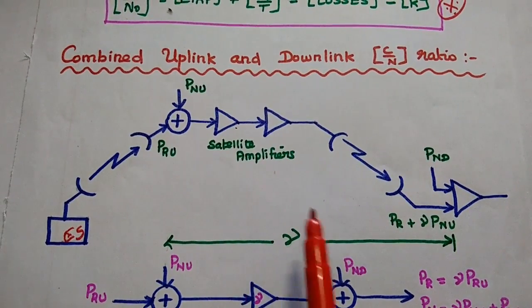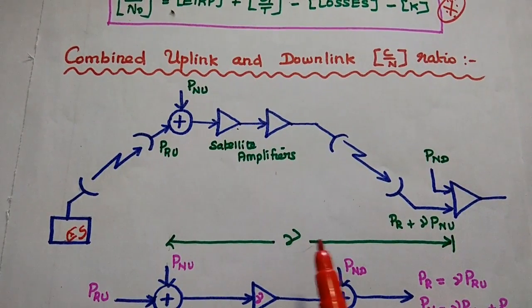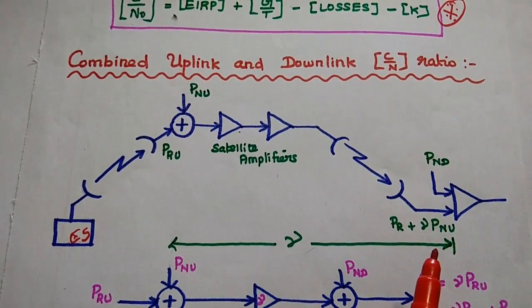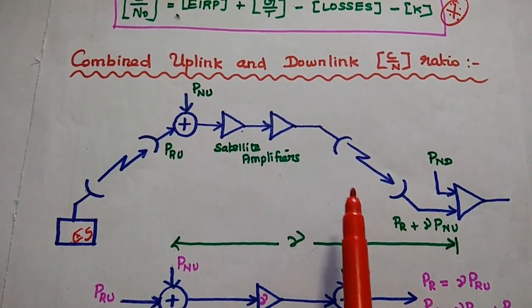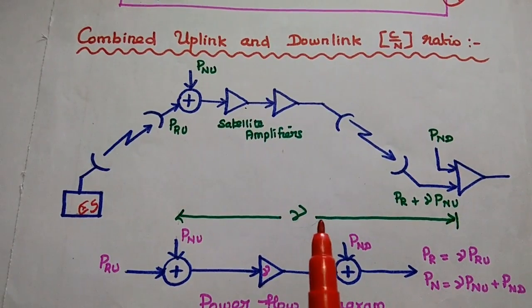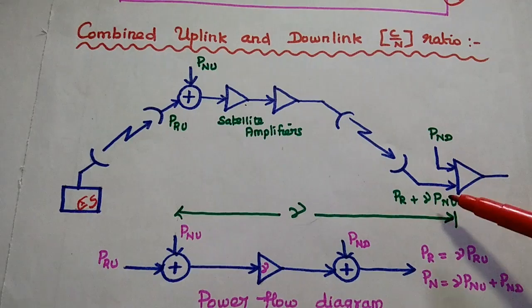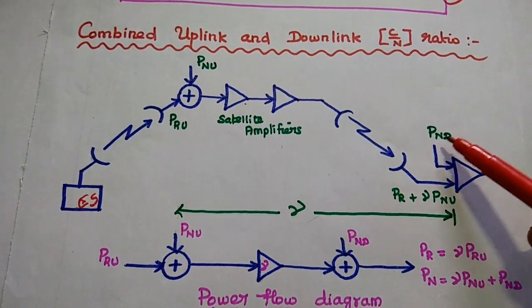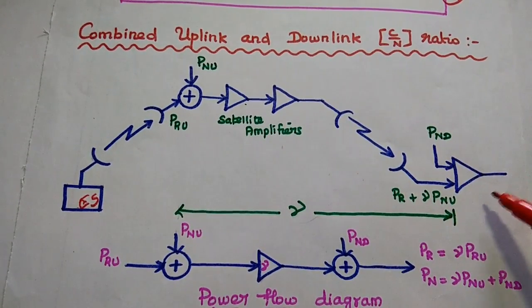Here PRU and PNU together are received as input to the satellite. The satellite has amplifiers to amplify the signal. The term gamma represents the system power gain. This gamma is the system power gain from the satellite input to the EIRP station. There can be different amplifier stages, and all the amplification factors together are considered as gamma. At the receiving point in the EIRP station, we can have two signals: one is PND, and another is the received power at the EIRP station.